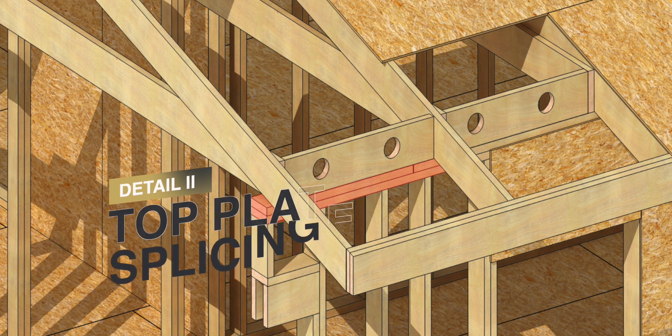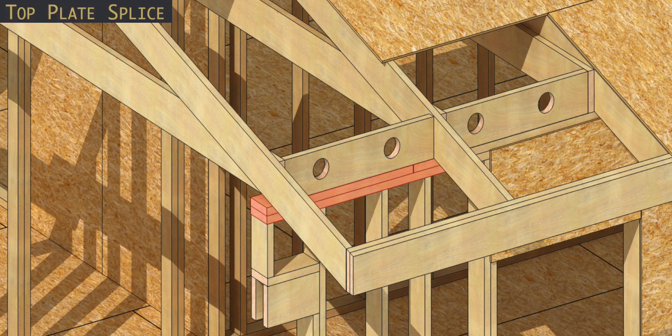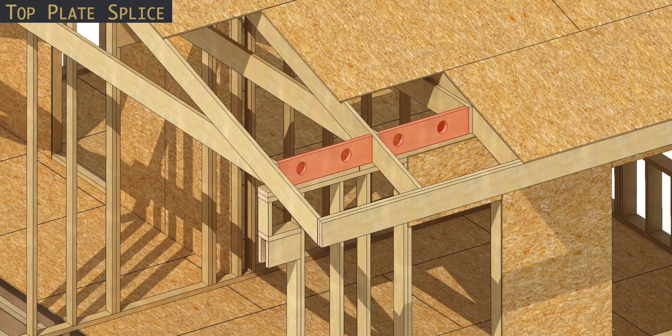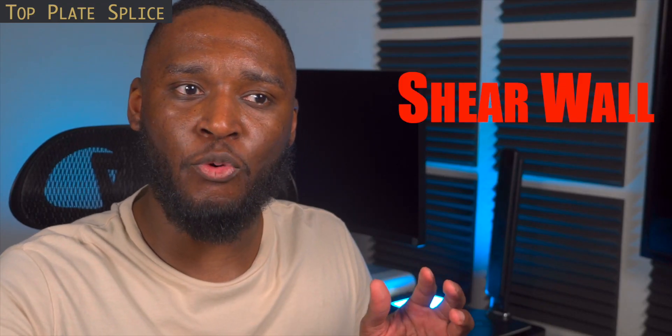The top plate, contrary to your belief, doesn't just support the roof or floor framing. This top plate is the element that helps transfer those lateral forces that come from the blocking we just talked about into the sheathing, which is the element that resists those lateral forces.